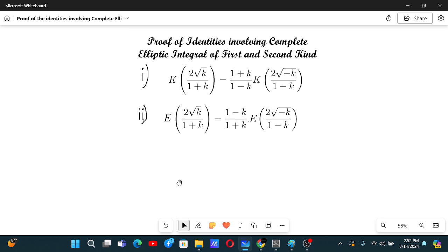Proof of identities involving complete elliptic integral of first and second kind. K is the complete elliptic integral of first kind, E is the complete elliptic integral of second kind.